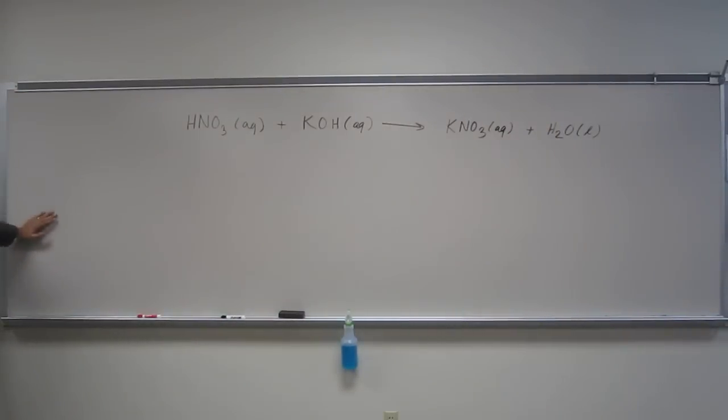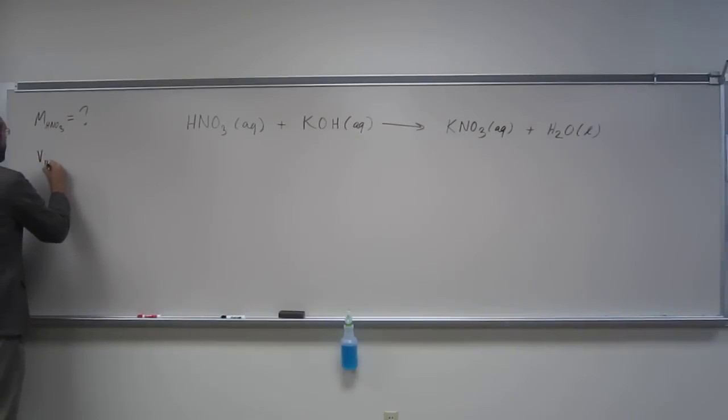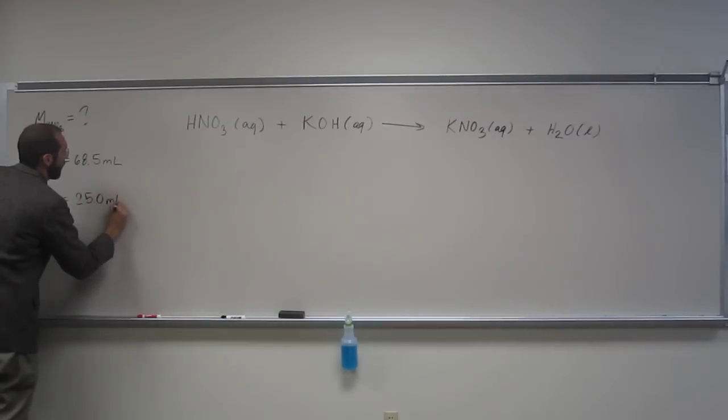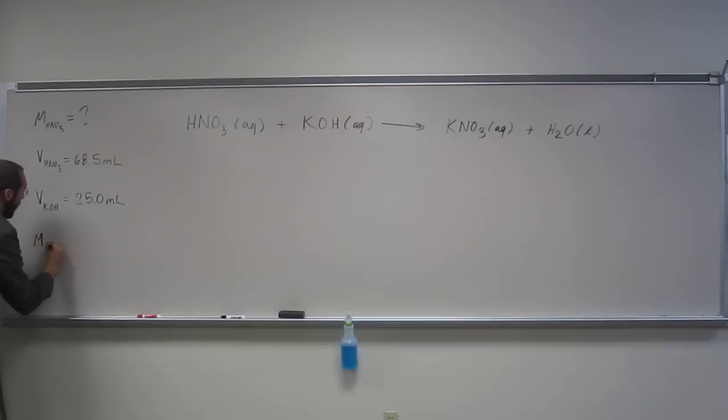Let's go about writing the stuff down now that it tells us. So it says what is the molarity of nitric acid? So that's what we're looking for. If 68.5 milliliters, so the volume of nitric acid is 68.5 milliliters, is needed to react with the volume of KOH which is 25.0 milliliters, and the molarity of KOH is 0.150 molar. Remember, this molar is moles per liter, so that kind of helps you out.